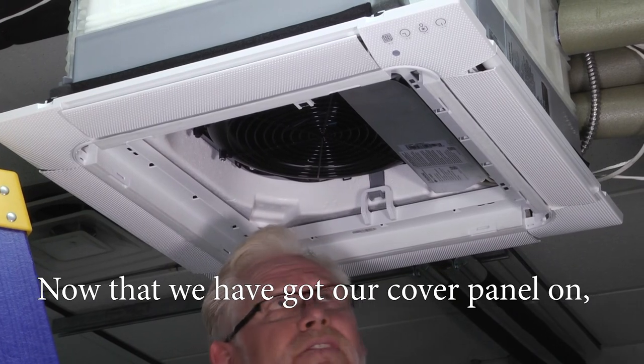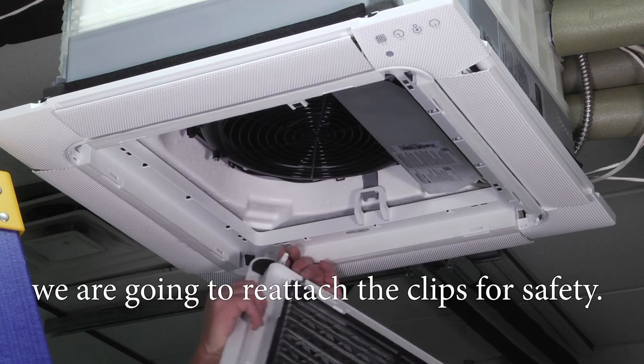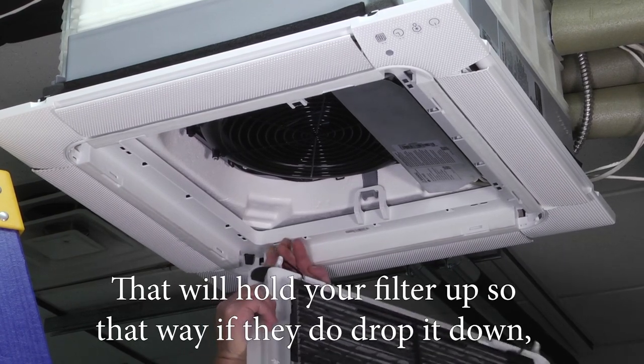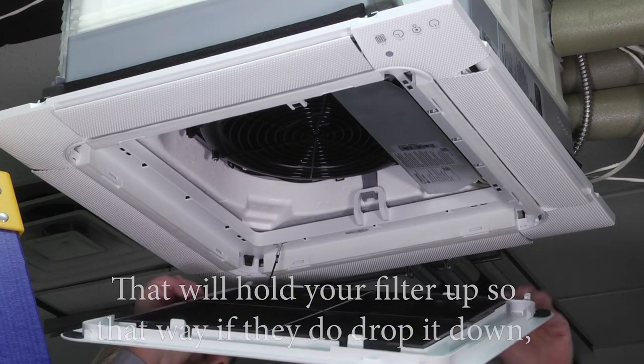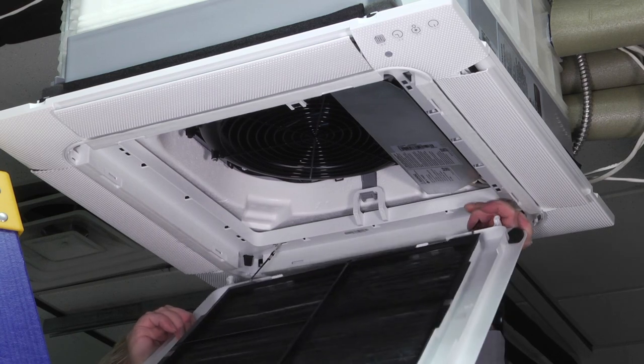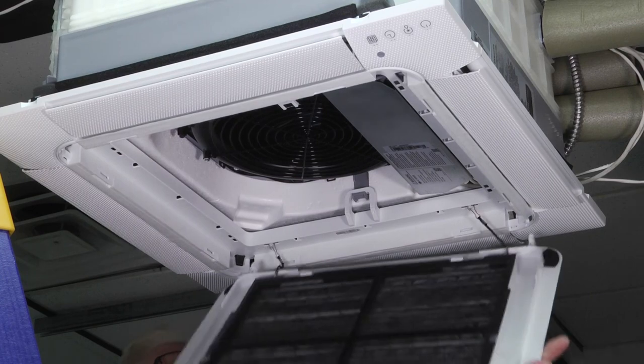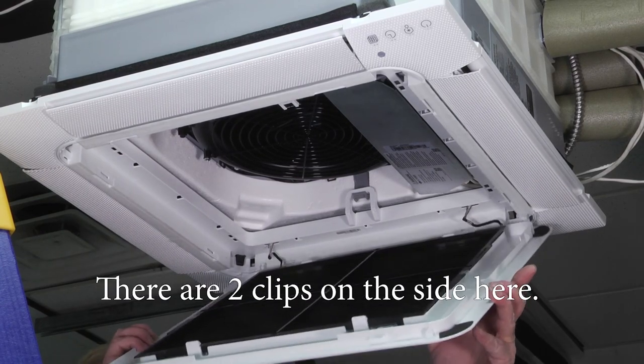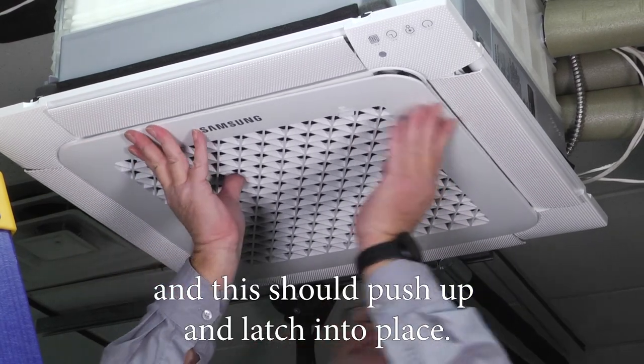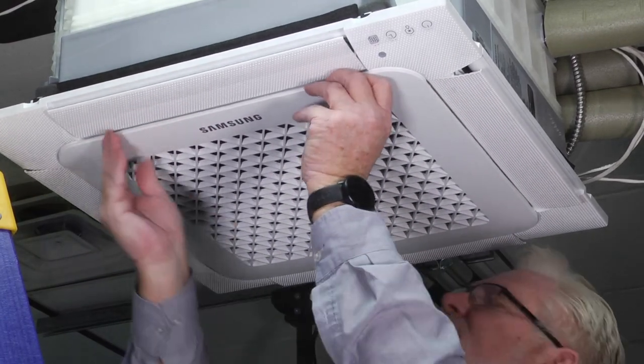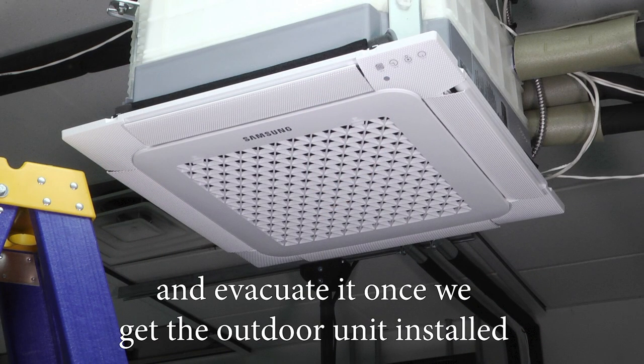Now that we've got our cover panel on, we're going to reattach the clips for safety. That will hold your filter up so that if they do drop it down, nobody accidentally gets it dropped on their head. There's two clips on the side here that's going to slide in and they should push up and lock into place. Now that we've got our cover on, we're ready to pressurize our system first and evacuate it once we get the outdoor unit installed, and we should be ready to go.